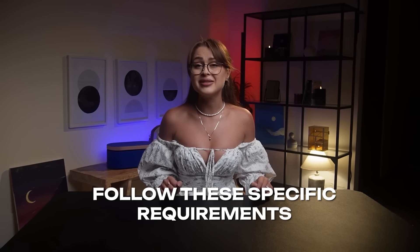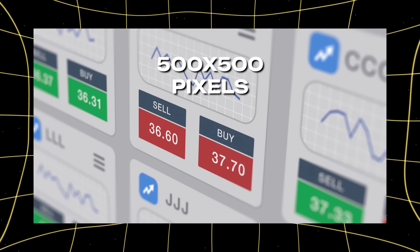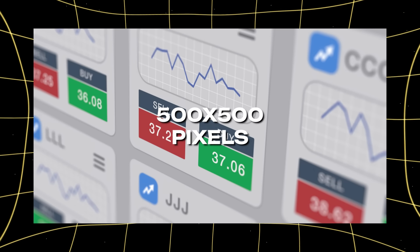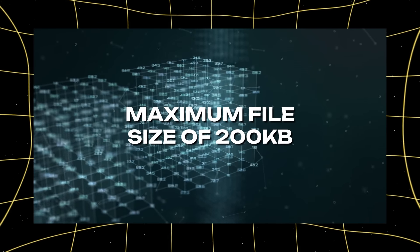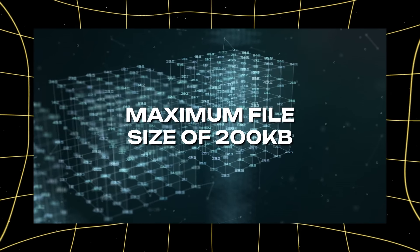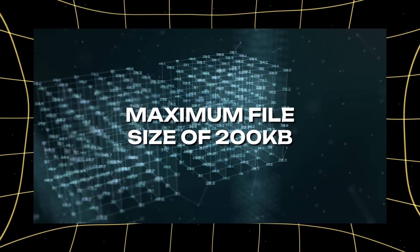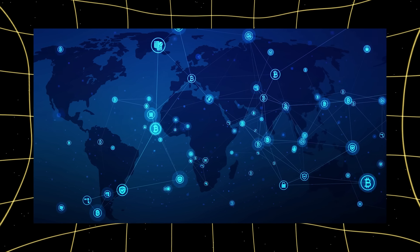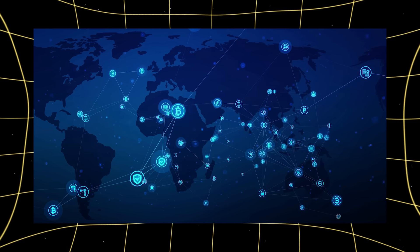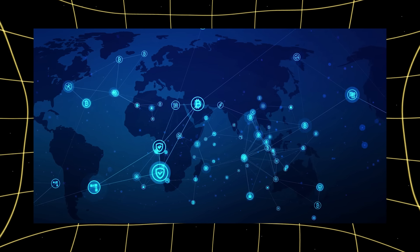For the image design, follow these specific requirements: aim for 500 by 500 pixels with a maximum file size of 200 kilobytes. Circular designs work best as they display well across all platforms. Consider working with a designer to create something truly memorable. Remember, this image will be a permanent part of the blockchain.